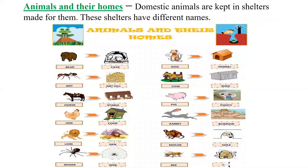Domestic animals are kept in shelters made for them, and these shelters have different names. A kennel is the name of a small shelter for a dog. Likewise, a stable is for horses, a coop is for hens, a pen is for sheep, and a shed is for cows.